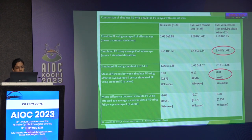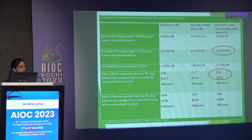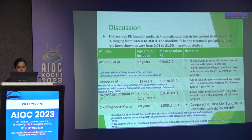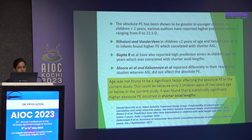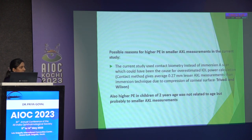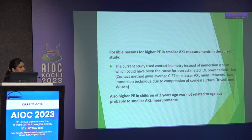In eyes with corneal scar involving the central visual axis, high prediction error was seen with standard K value of 44 diopters, while simulated prediction error using the fellow eye showed no significant difference. The range of prediction error in this study was similar to other studies in literature, and evidence shows children under 2 years have higher prediction errors ranging from 0 to 21 diopters, correlated with shorter axial length. The possible reason for overestimation was use of contact biometry rather than immersion technique, which measures axial length higher.